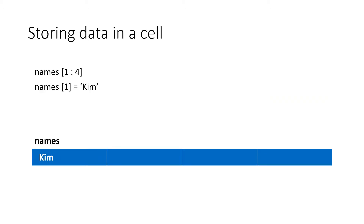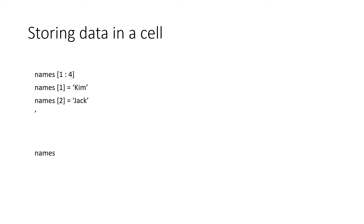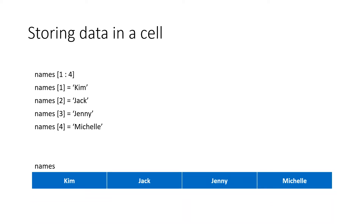To store data in a cell, you would say names[1] = 'Kim', and you'd get the result as shown. You could carry on: names[2] = 'Jack', names[3] = 'Jenny', and names[4] = 'Michelle', until the whole array is filled.